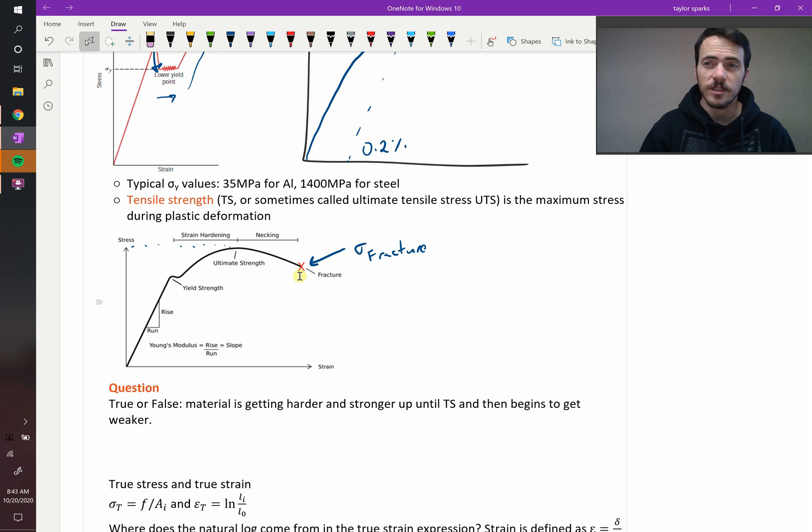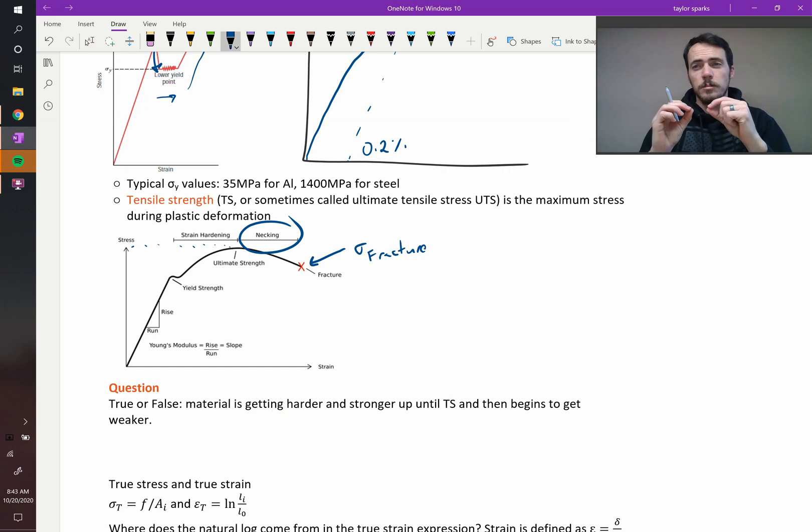So it's a bit of a trick question. As you deform materials, they always get harder and stronger, so why would it look like it's going down? You get, right here it's labeled, you get necking occurring. Necking in your material is when you get localized plastic deformation, so instead of the whole thing deforming sort of uniformly, you get local deformation. So let's say this is your dog bone.